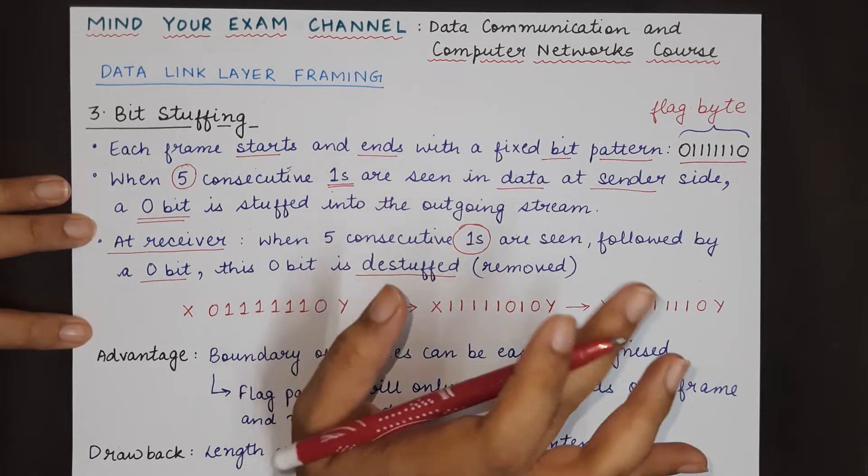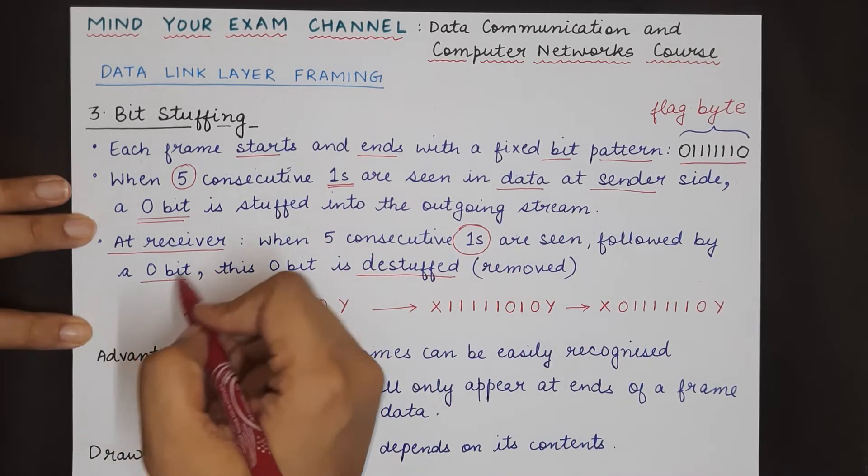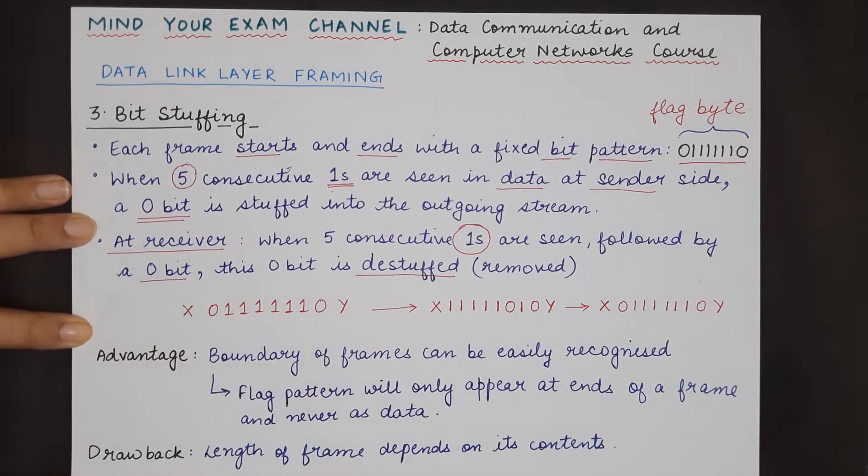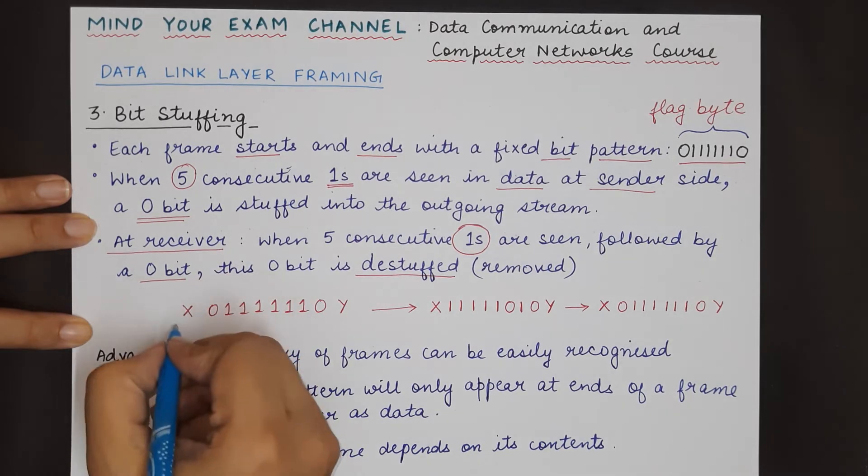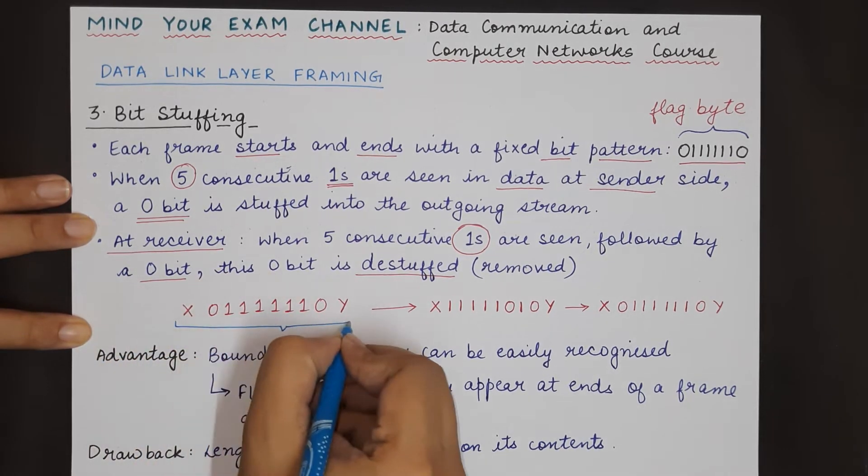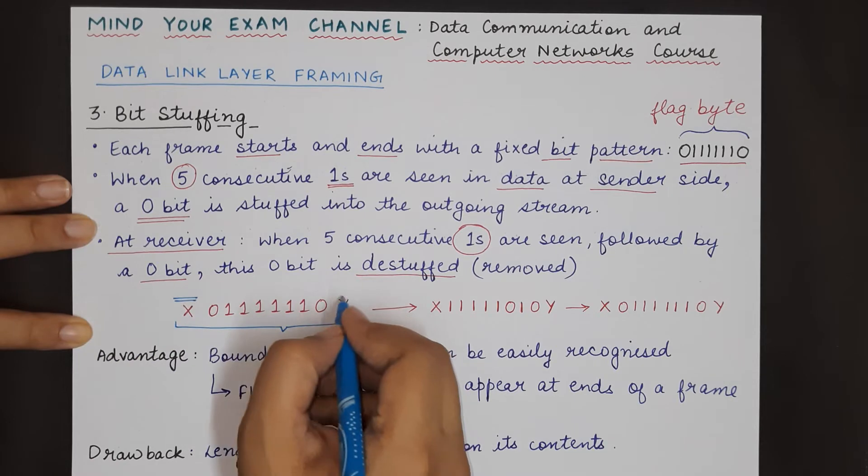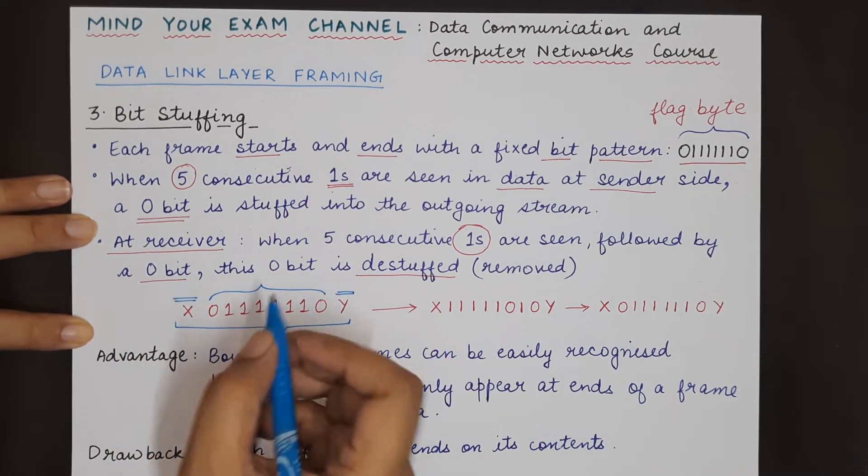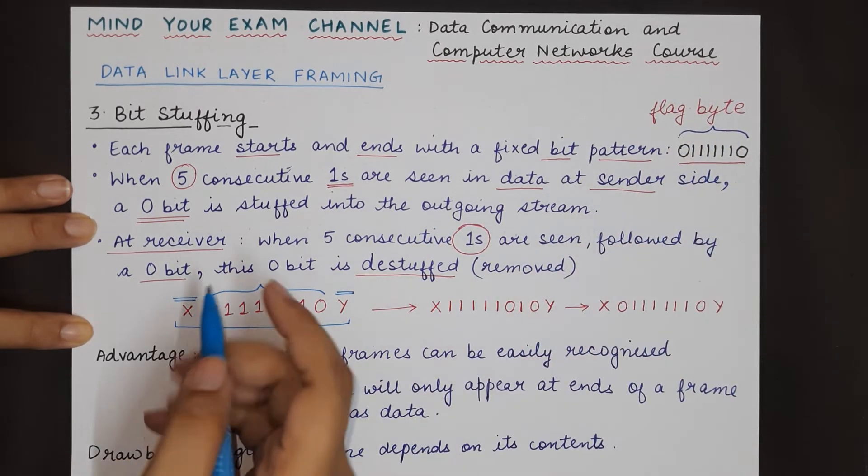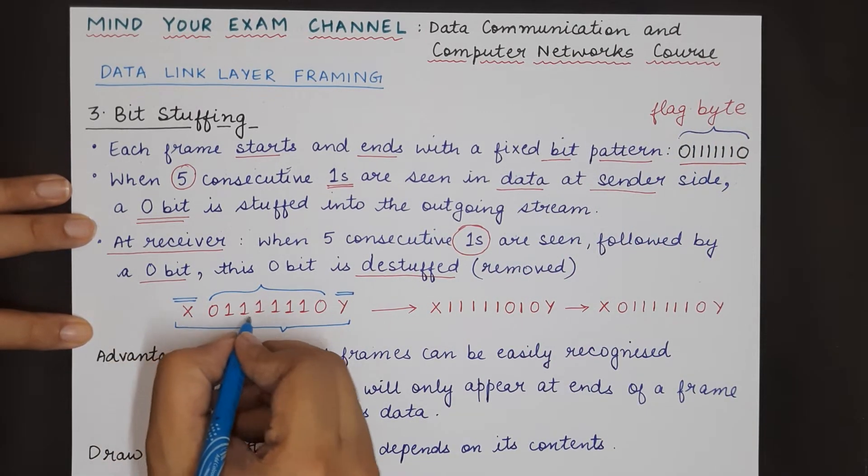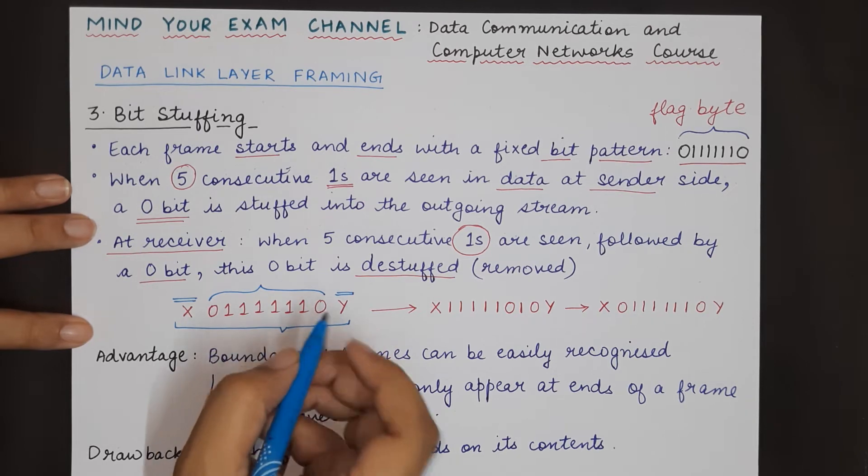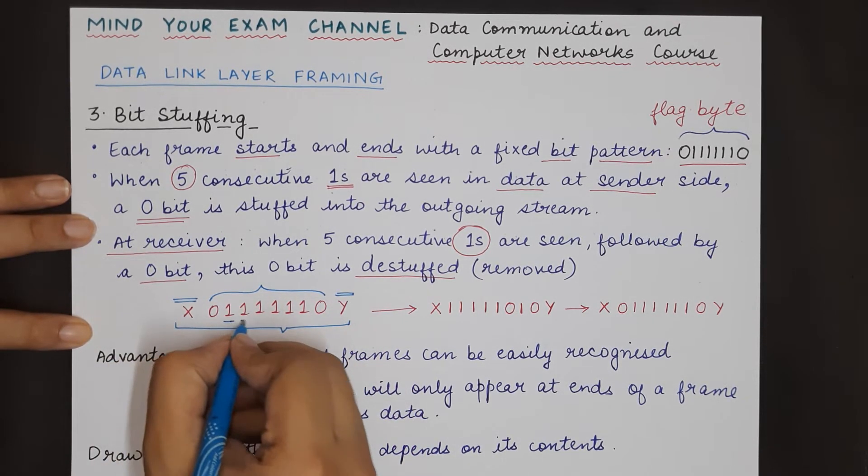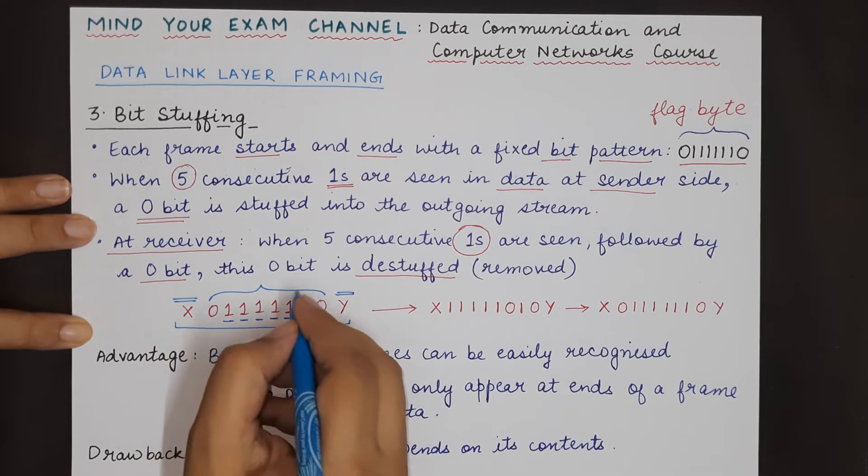Let's take an example. Suppose this was the bit stream being sent from the sending side. It has some bits before it and some bits after it. In the middle there is this flag byte pattern, that means zero followed by six ones and another zero.